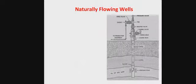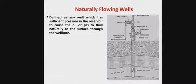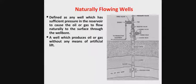Then you have the natural flow — the naturally flowing well. This is the simplest type of well. It is a well whereby you don't need any external driving force to drive the oil or gas from the well. A naturally flowing well is defined as any well which has sufficient pressure in the reservoir to cause the oil or gas to flow naturally to the surface through the well bore. It can also be defined as a well which produces oil or gas without any means of artificial lift.